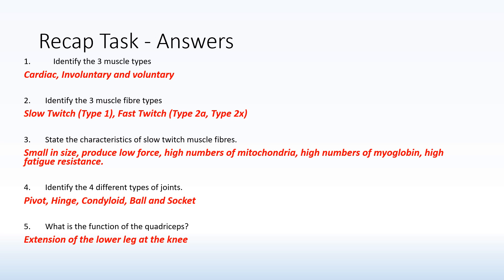The four different types of joints: you've got pivot, found in the neck; hinge, found in the elbow, knee, and also the ankle — though remember this is for the LXL spec, so that might differ when referring to the ankle joint; the condyloid joint, found in the wrist; and the ball and socket, found in the shoulder and hip. The function of the quadriceps is to extend the lower leg at the knee joint.